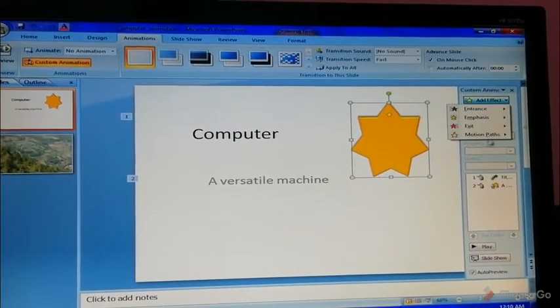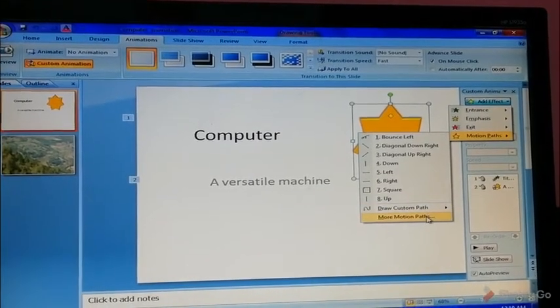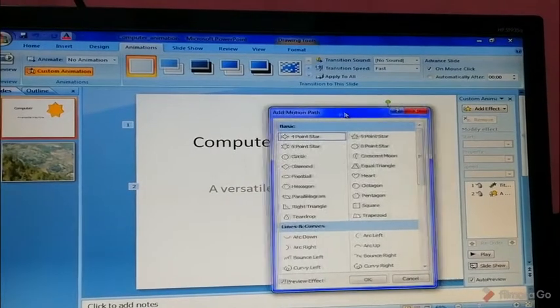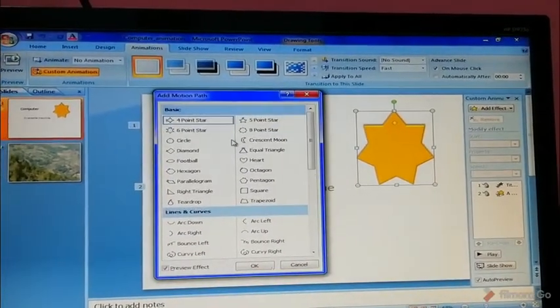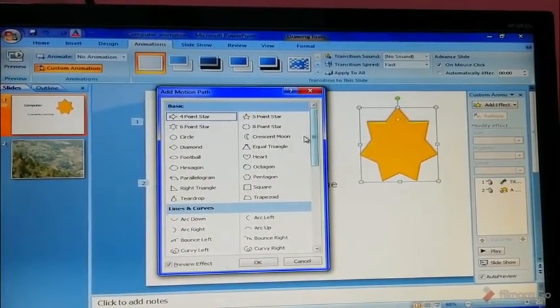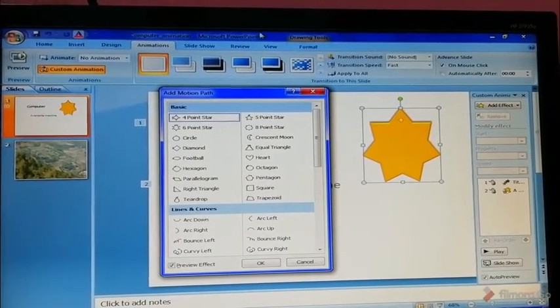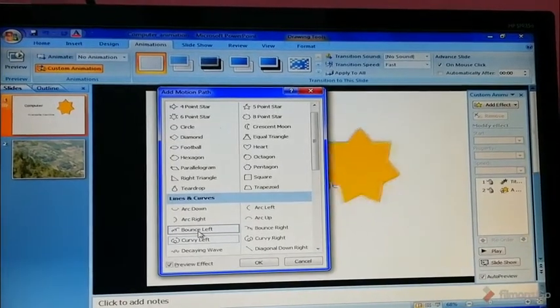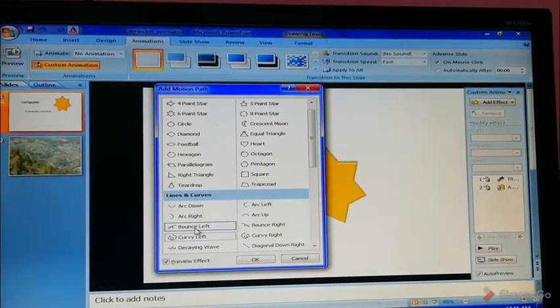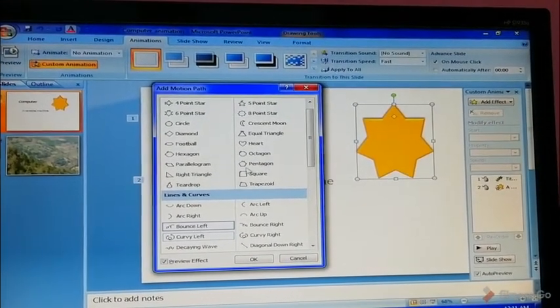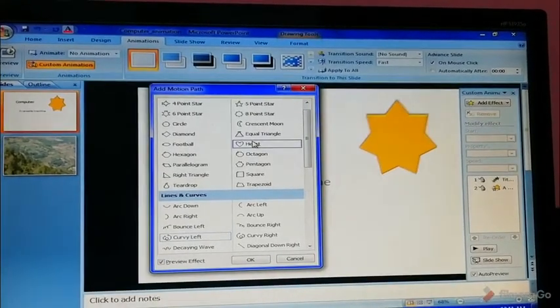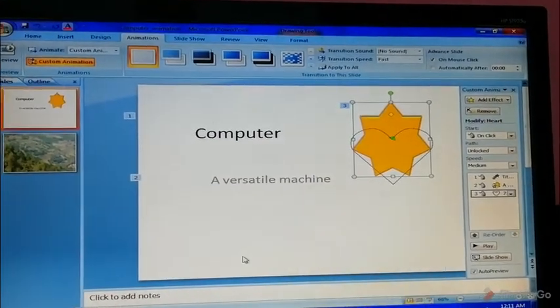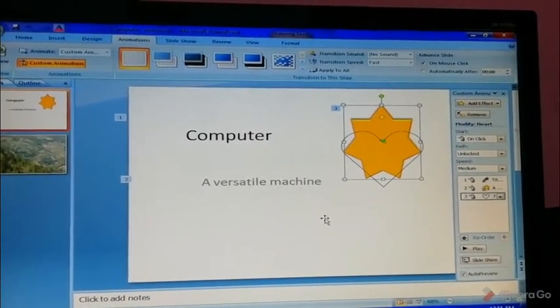Now I will show you Motion Path. See the Bounce Left, it will bounce like this. Click on the OK button after selecting any effect.